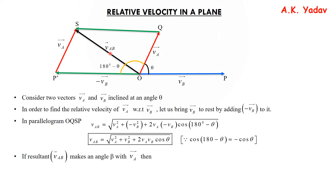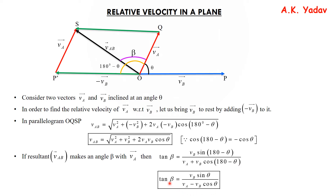Now if the resultant vab makes an angle beta with va, then tan β = vb·sin(180° − θ) / (va + vb·cos(180° − θ)), which gives tan β = vb·sinθ / (va − vb·cosθ). Do remember we have found the angle with va, so vb sinθ is in the numerator and (va − vb cosθ) is in the denominator.